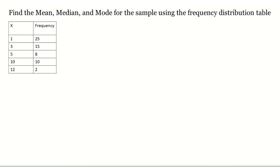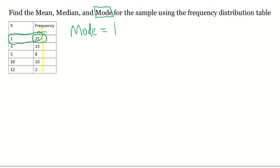For the last item we're going to look at mode. When you have a frequency table, the mode is super easy — we just look at the row of frequencies and find which one is the largest. We can see the largest frequency is 25, which corresponds to the x value of 1. So my mode is going to equal 1. And that's how you solve for the mean, median, and mode for a sample using the frequency distribution table.